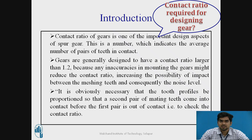Gears are generally designed to have a contact ratio larger than 1.2, because any inaccuracies in mounting of the gears might reduce the contact ratio, increasing the possibility of impact between the meshing teeth and consequently the noise level. It is obviously necessary that the tooth profile be proportioned so that the second pair of mating teeth comes into contact before the first pair goes out of contact.